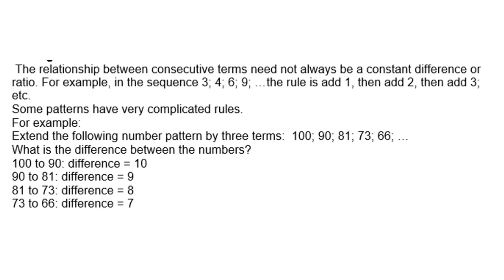The relationship between consecutive terms need not always be a constant difference or a ratio. For example, in the sequence 3, 4, 6, 9, the rule is: add 1, then add 2, then add 3, etc.